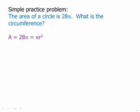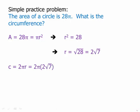Set that area 28 pi equal to pi r squared. Cancel the pi's. We get r squared equals 28 or r equals the square root of 28. Of course, we can simplify that to 2 root 7. The circumference equals 2 pi r. So 2 pi times 2 root 7, that would be 4 pi root 7. And that is the circumference of the circle.